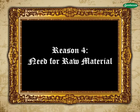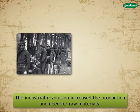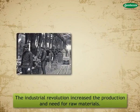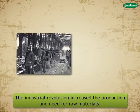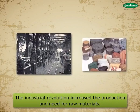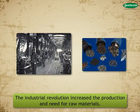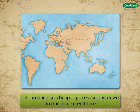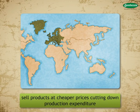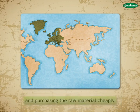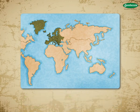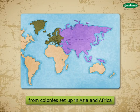Reason 4 — Need for Raw Material: The industrial revolution not only increased production but also increased the need for raw materials, which created a hunger for new markets and new sources of raw materials. In order to capture markets, European nations had to sell products at cheaper prices. For this, they started cutting down production expenditure and purchasing raw material cheaply from colonies they set up in Asia and Africa.